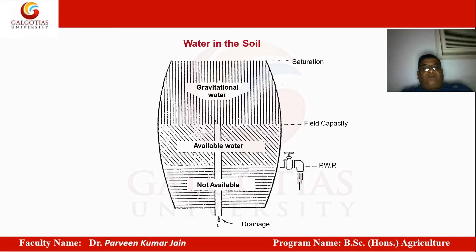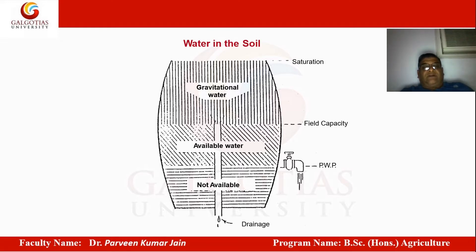To refresh things, I've brought this picture so you can understand field capacity. In flood conditions the soil becomes saturated, then there is a flow of gravitational water. Once the gravitational water infiltrates, a situation of field capacity comes, and the available water remains accessible to plants until the permanent wilting point.